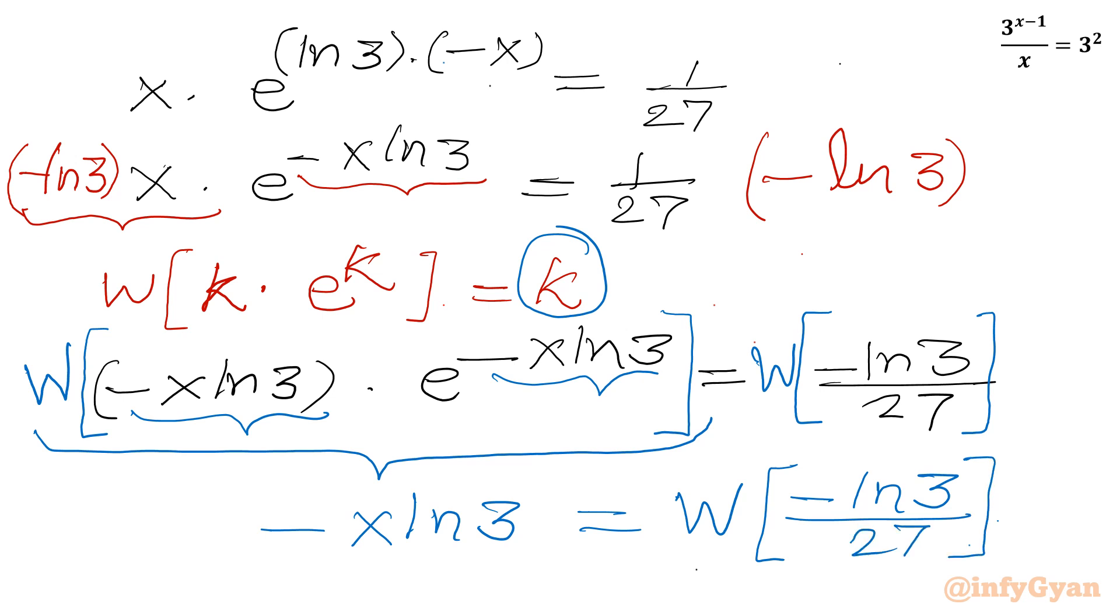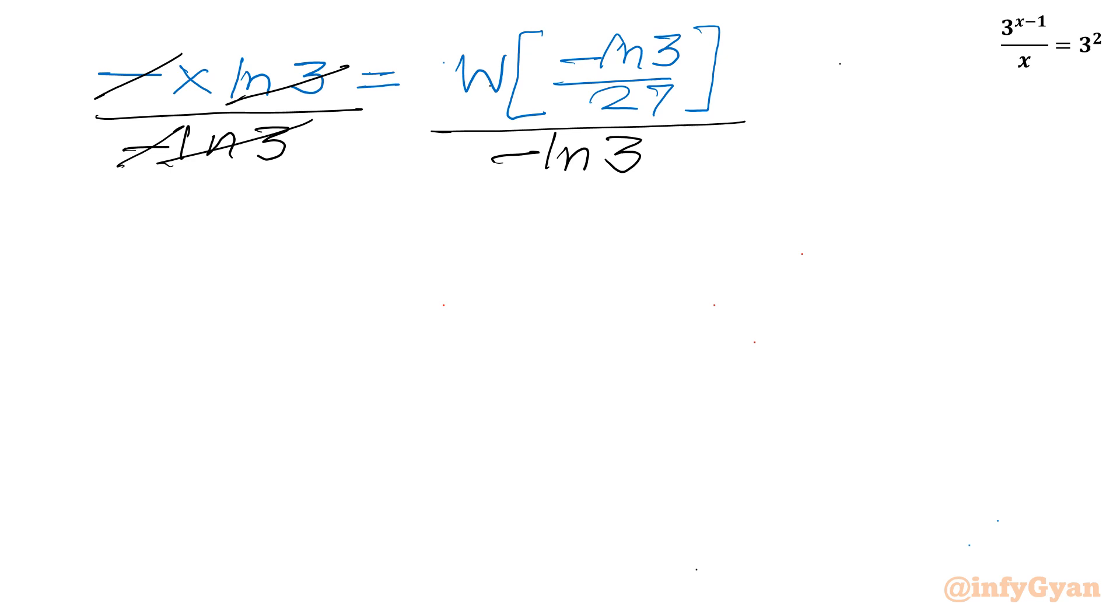Now I need to divide both sides by minus ln 3. Let me write minus x ln 3 equals Lambert W function of minus ln 3 divided by 27. Let us divide both sides by minus ln 3. So ln 3 and ln 3 will be cancelled out, minus and minus will be over, so it is left in the left hand side x only.